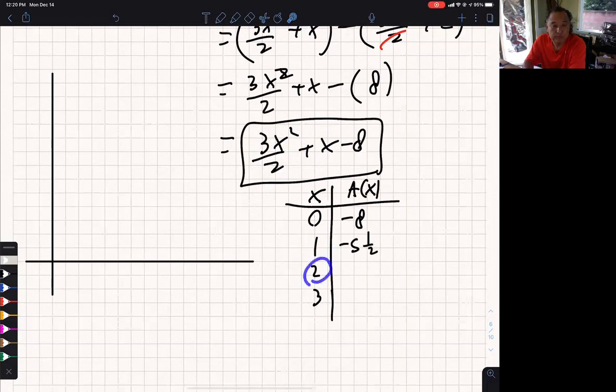Then I plug in 2. If I plug in 2 there, one of those cancels with one of those, leaving 6. 6 plus 2 is 8. Minus 8 is 0. And then let me plug in 3. That's 9. 27 over 2 is 23½. 23½ plus 3 is 26½. 26½ minus 8, is that 16½? I think it's 16½.